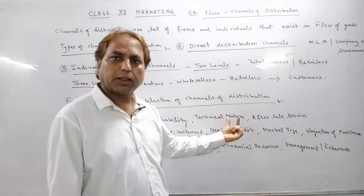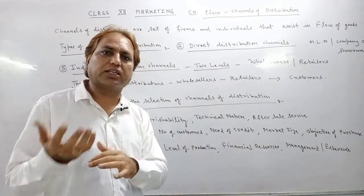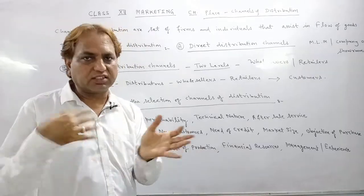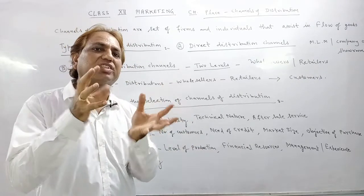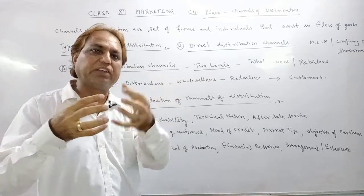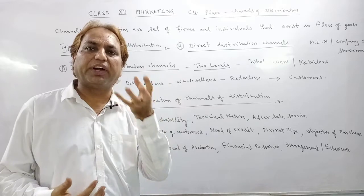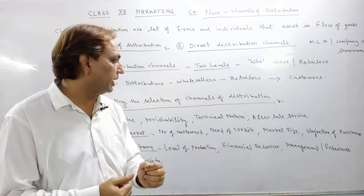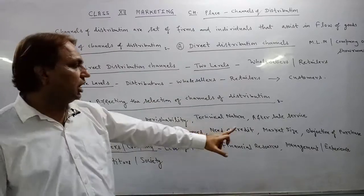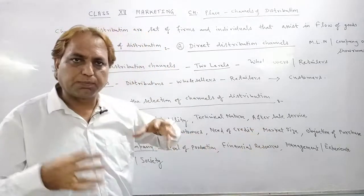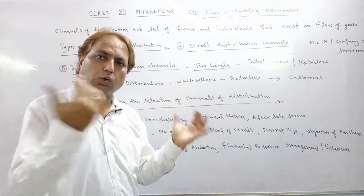The need for credit is also a factor. For vehicles like bikes, scooters, and cars, and for electronic goods, we can connect our distributors with finance companies. Our wholesalers and retailers can be linked with finance facilities to provide credit to customers. Market size is also important — if our company's market size is bigger, we can opt for two-level or three-level distribution.